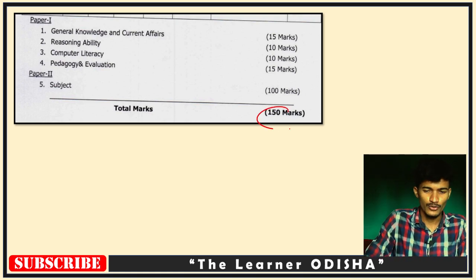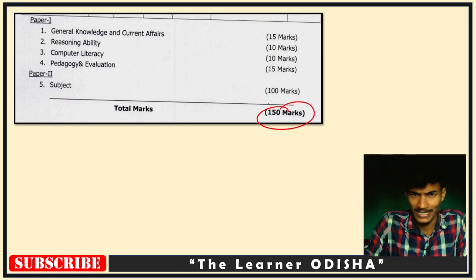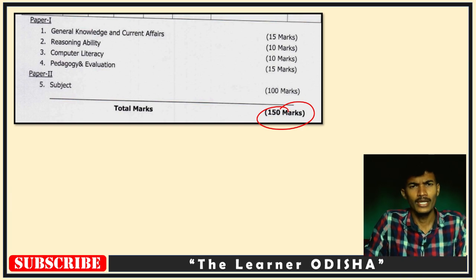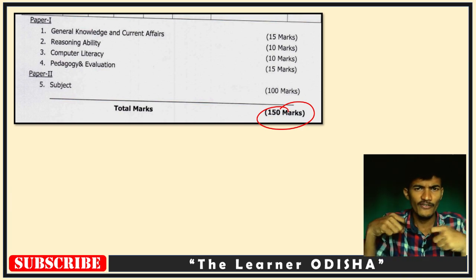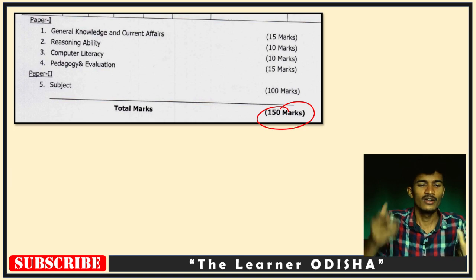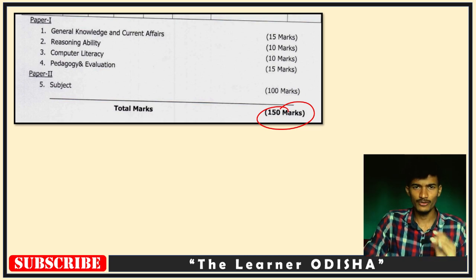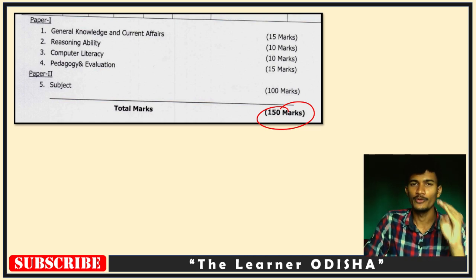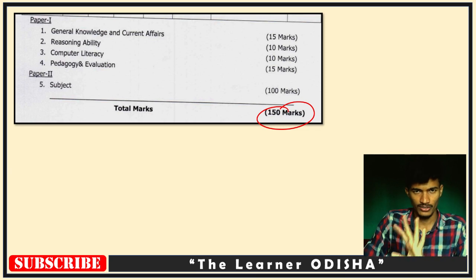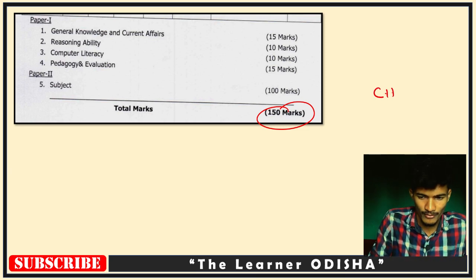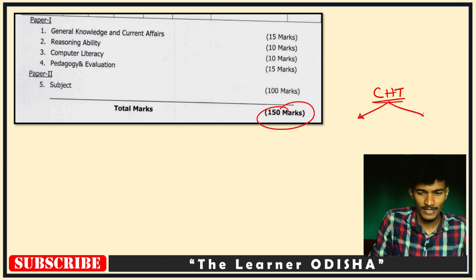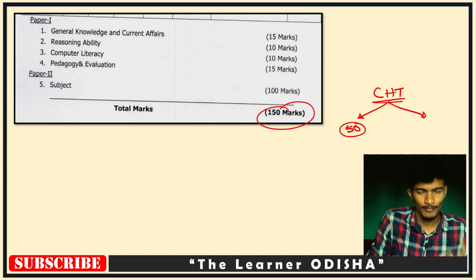We know that this exam is a total of 150 marks. It is for the contractual high school teacher, and it follows the OSSTT pattern. The exam has two papers: Paper 1 is 50 marks and Paper 2 is 100 marks.